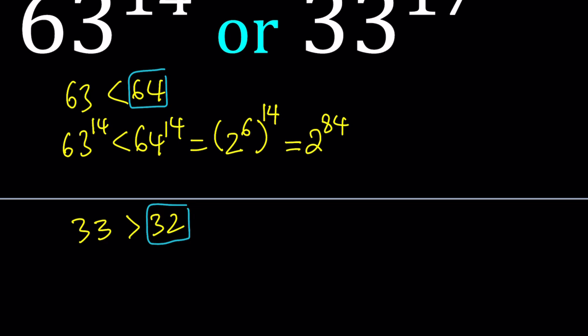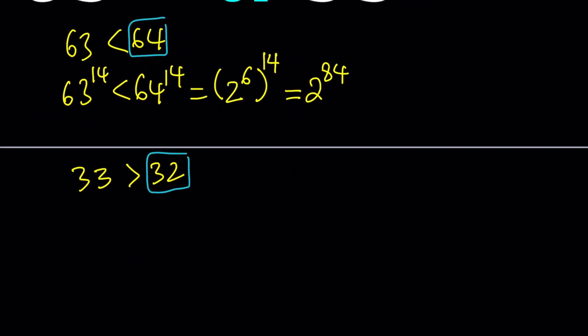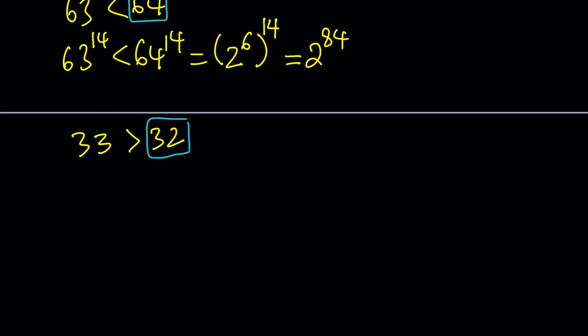So now, we're going to go ahead and raise both sides to the 17th power. Therefore, we're going to be getting 33 to the 17th power. And of course, that's going to be greater than 32 to the 17th power. Because 33 is bigger. And now, we can kind of replace. Like, remember what we did here? We replaced 64 with 2 to the 6th. And 32 is 2 to the 5th. And this is what makes this problem really cool and workable.